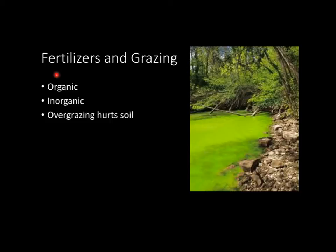Now let's look at fertilizers. There are two main types. The first is organic fertilizer — think compost and decomposed organic matter — which is really good for crops, helps everything grow, and is good for the environment. The other type is inorganic fertilizer, which is synthetic or mined. The problem with inorganic fertilizers is they are more prone to erosion and runoff, which can cause eutrophication and create a feedback loop that destroys the ecosystem.